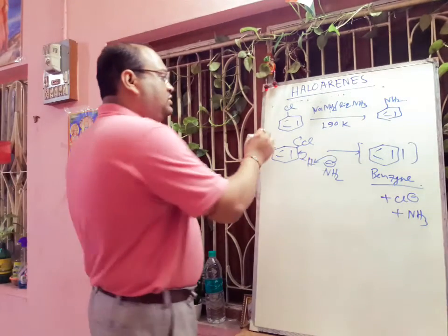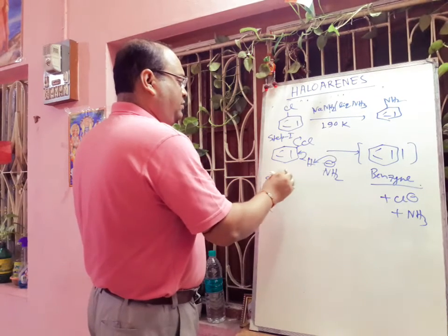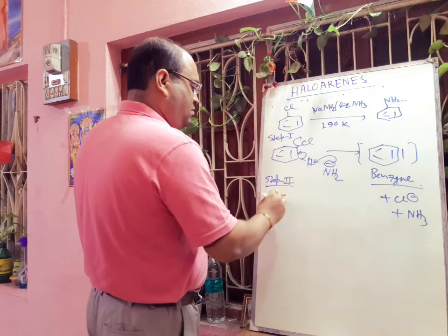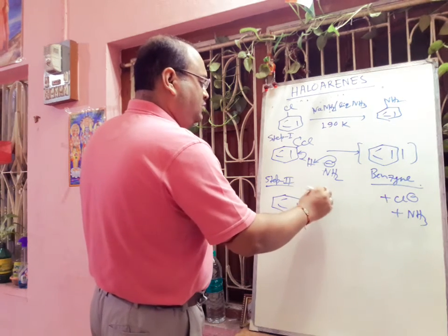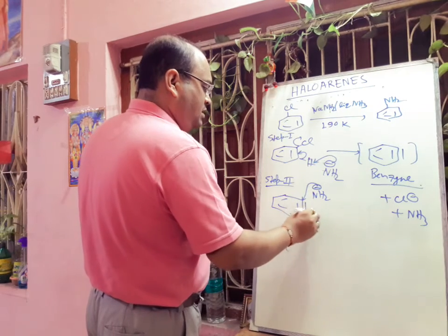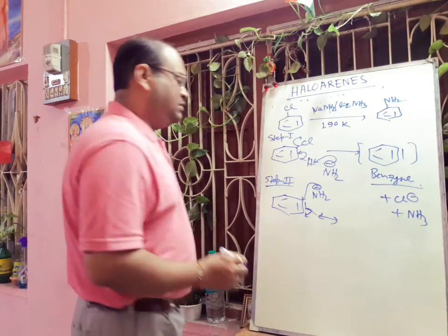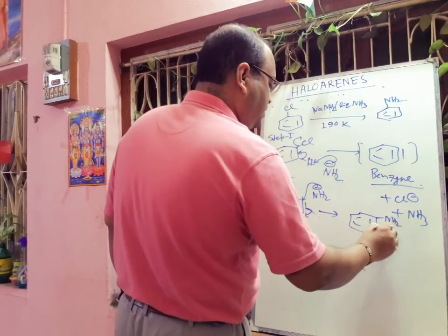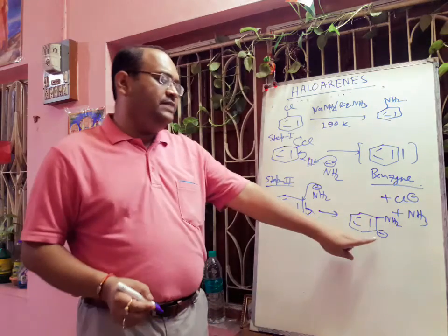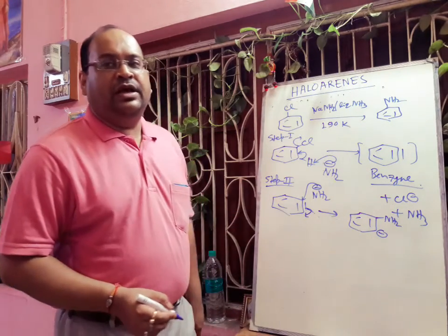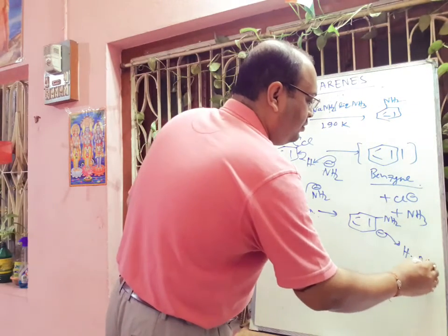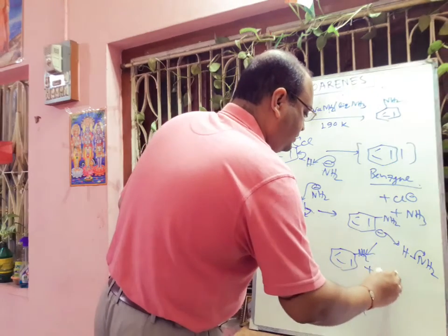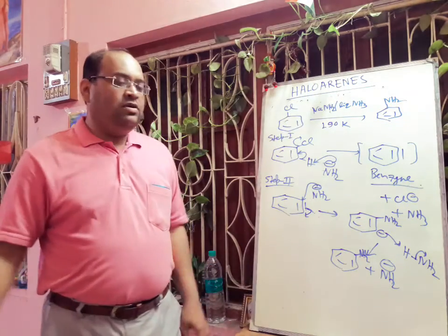In step 2, NaNH₂⁻ — which is a good nucleophile — attacks the carbon atom of the benzyne ring, and then abstracts a proton from an ammonia molecule. Finally, we get aniline as the product. So this reaction proceeds through the benzyne mechanism.